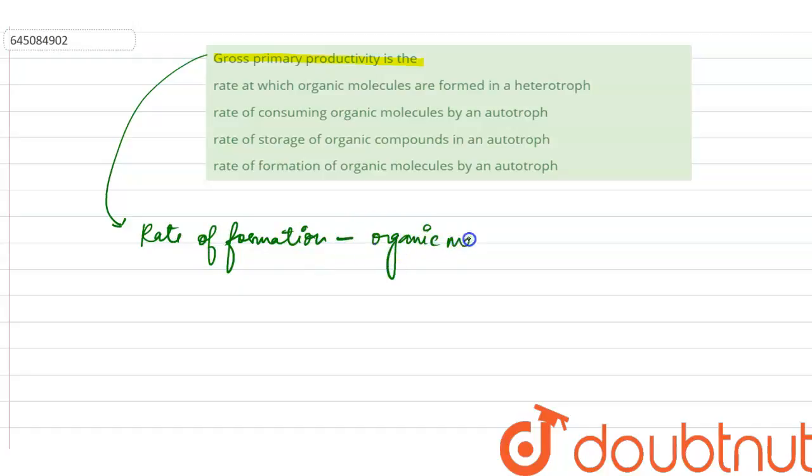Who produces our organic matter? It is from our producers. The rate of formation of organic matter from producers. How do the producers produce? Through our process called the photosynthesis.